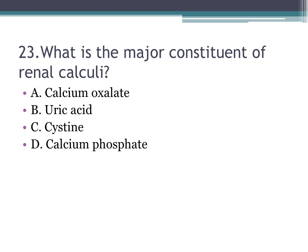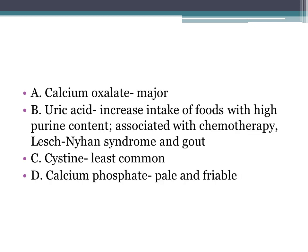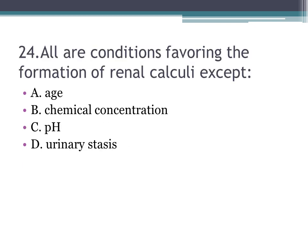Number twenty-three: what is the major constituent of renal calculi? A. calcium oxalate, B. uric acid, C. cystine, D. calcium phosphate. The correct answer is A, calcium oxalate. Uric acid is associated with high purine intake, chemotherapy, Lesch-Nyhan syndrome (orange diaper syndrome), and gout. Blue diaper syndrome is Hartnup disease. Cystine is the least common. Calcium phosphate is pale and friable.